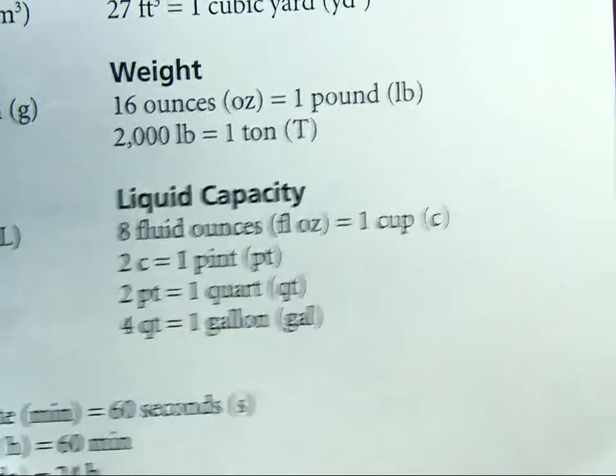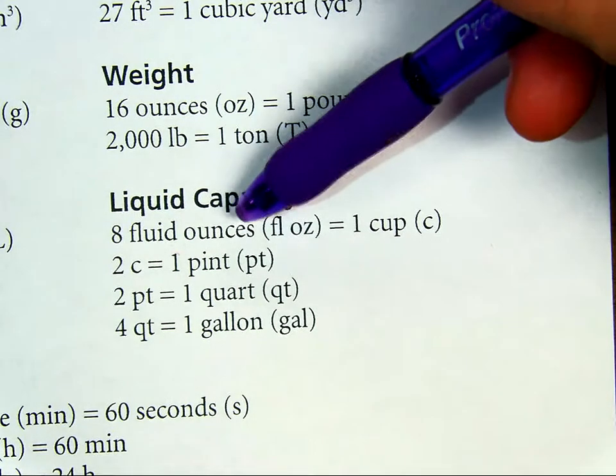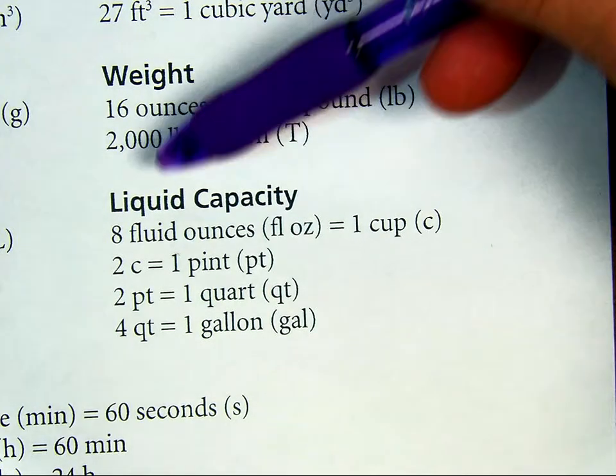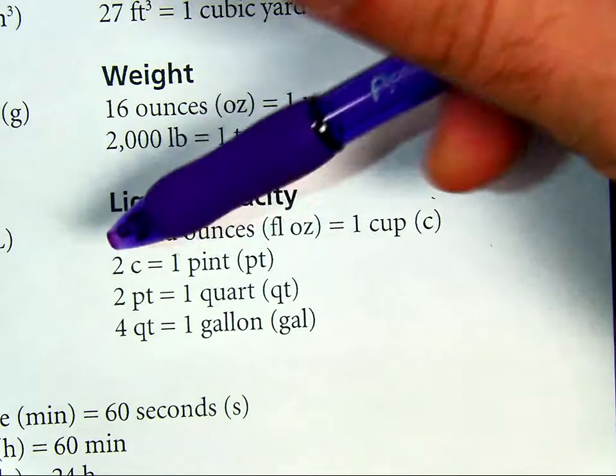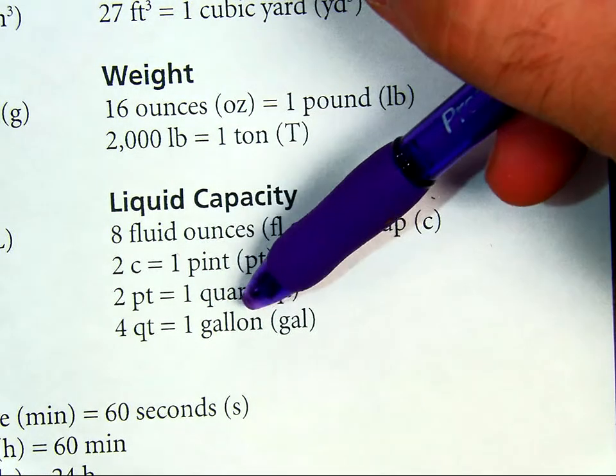For liquids, there are 8 fluid ounces in a cup, 2 cups in a pint, 2 pints in a quart, and 4 quarts in a gallon.